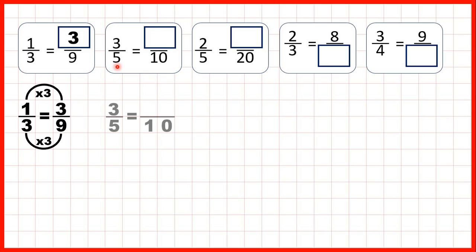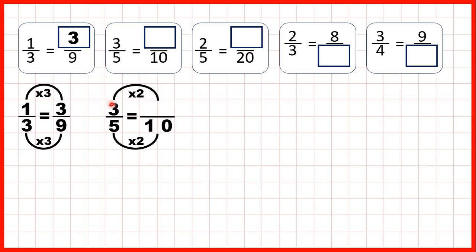Now, three fifths is the same or equivalent to how many tenths? Well, ten is in the five times table, and five times two is ten. What we do to the denominator we do to the numerator as well, and three times two is six, so that's our missing numerator.